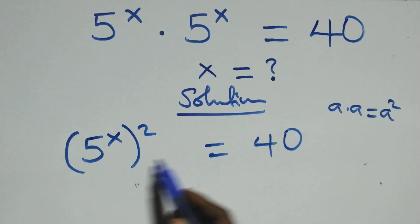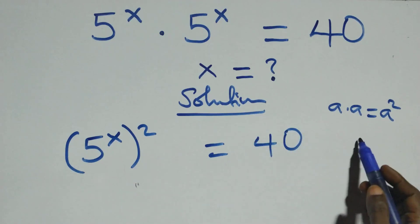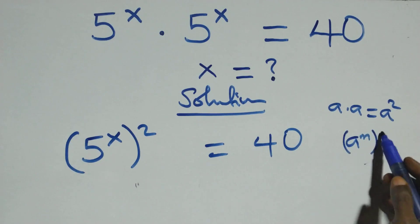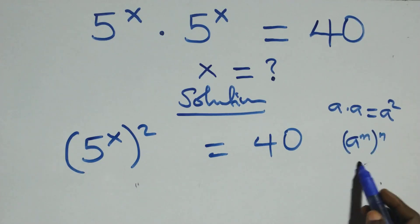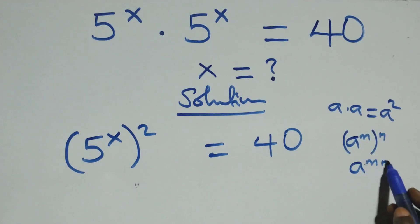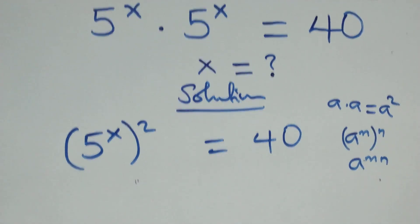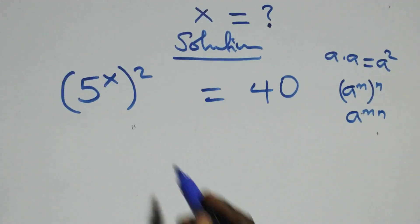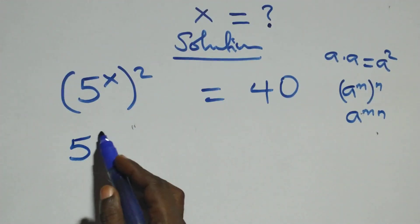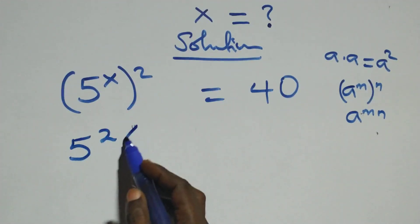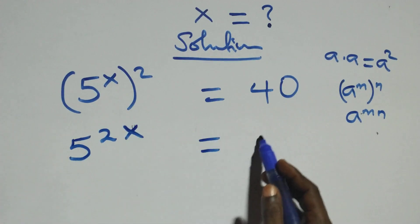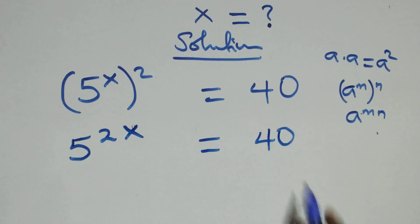Then from here, this also follows. We have a raised to power h, raised to power h, which is the same thing as a raised to power h times h — the powers multiply. So we have 5 raised to power 2x equals 40.